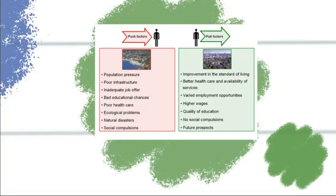Now here's the fun part, in my opinion. I mentioned push and pull factors — the reasons why people migrate or decide to make changes in their location. Under push factors, examples include population pressure, poor health care, natural disasters, bad educational chances, and inadequate job offers. Pull factors are things like improvements in the standard of living, higher wages, quality of education, no social compulsions, and future prospects. That's what draws people to want to make a move, and the opposite is why people want to leave. We'll look at different scenarios and where they've been applied.